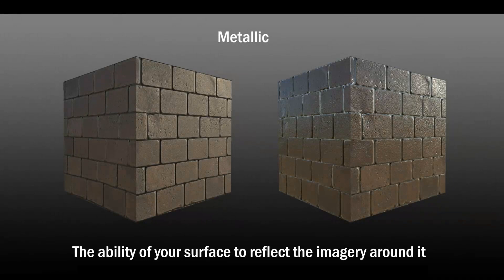Here on the left we have our standard cube with the black Metallic Map, and on the right I've swapped it to be completely white. White means it is completely metallic, and black means it is completely not metallic. Anywhere in between changes how metallic and reflective that surface is. On the right you can see it's quite reflective, picking up the environment — you can see the sky and sun being reflected.